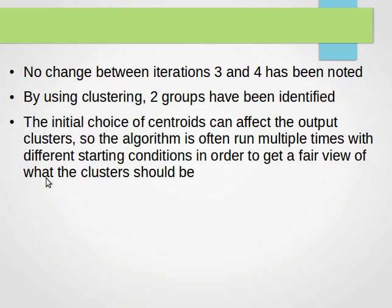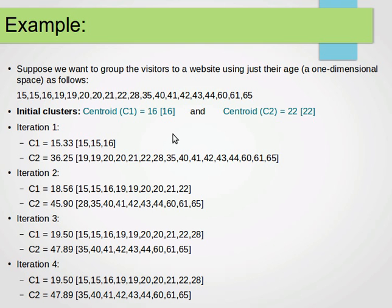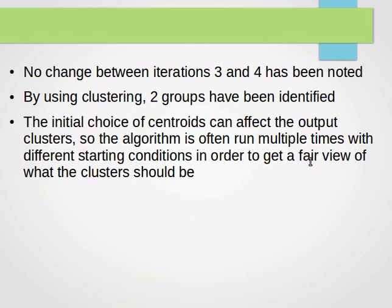So the algorithm is often run multiple times with different starting conditions in order to get a fair view of what the clusters should be. What that means is randomly here we chose, for example, 16 and 22 at the beginning. We can run it again, maybe starting with 19 and 44, run a third time maybe starting with 15 and 43, and so on and so forth to get a fair view of what the clusters should be.